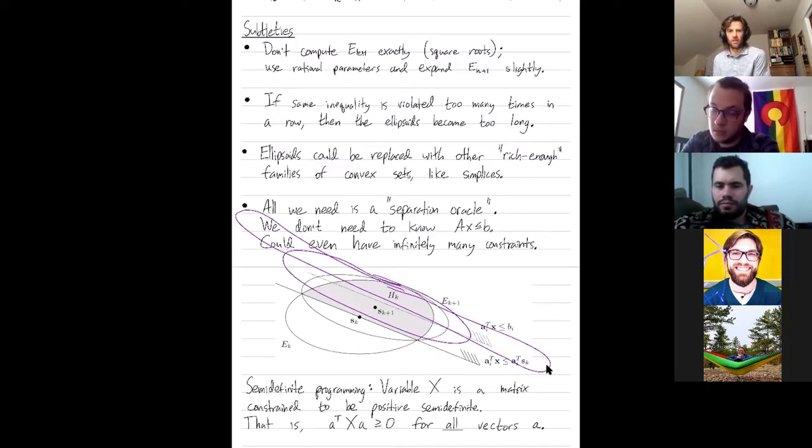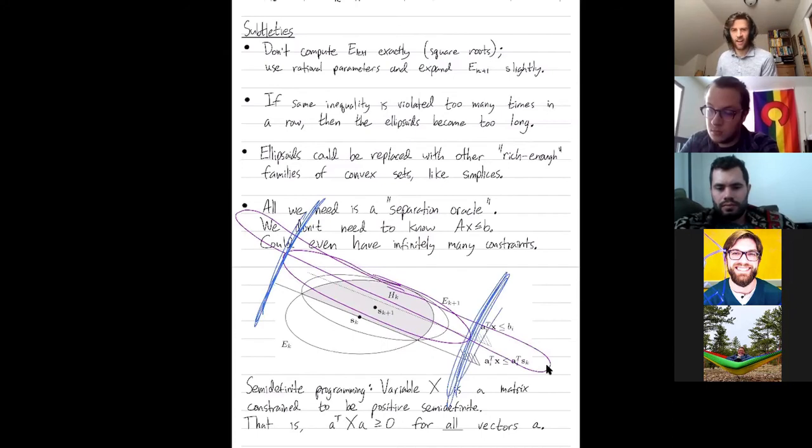And so to account for this problem, what people have to do is they have to find ways to sort of truncate ellipses that get too narrow. Cut off this part.